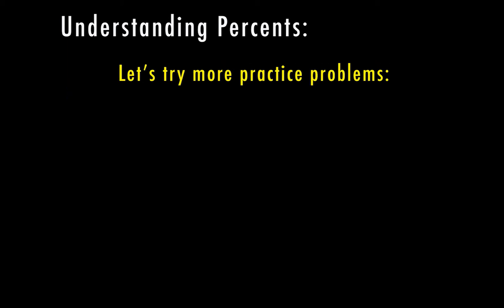Let's try a few more practice problems. This is a pretty easy concept, but the hardest part is understanding what that percent represents. If half of the people want to get a cookie for lunch, we convert this to a percent — out of one hundred people, two goes into one hundred fifty times, and fifty times one is fifty. So this would be fifty percent.